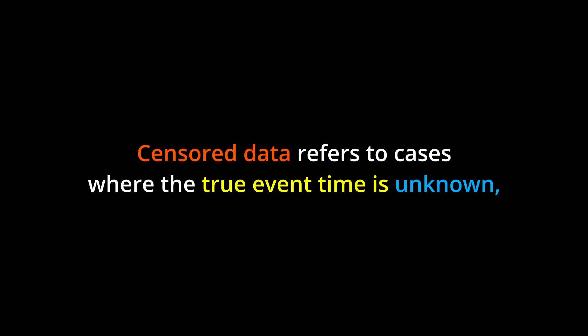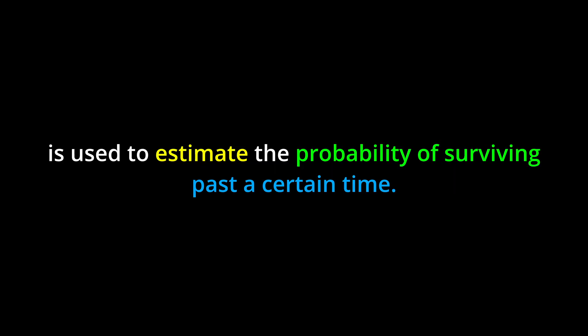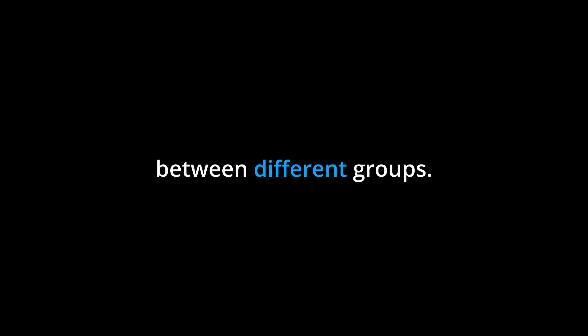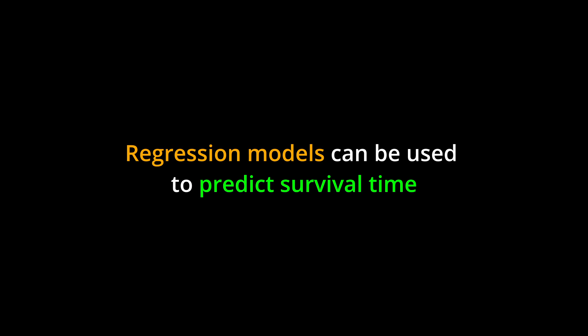Censored data refers to cases where the true event time is unknown, but is known to be at least a certain value. The Kaplan-Meier survival curve is used to estimate the probability of surviving past a certain time. The log rank test is used to compare survival curves between different groups. Regression models can be used to predict survival time based on other variables.